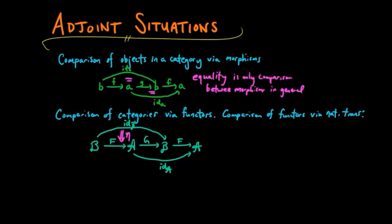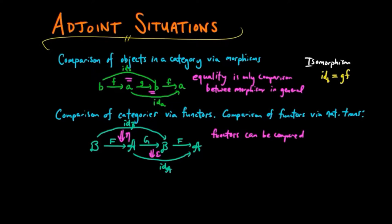For example, the identity functor on B may not be equal to GF, but there may be a way to transform it via eta to GF. In other words, functors can be compared in other ways. The situation above is an isomorphism between objects, which is nearly as good as saying that A is the same as B — it is, in some sense, the correct notion of sameness in a category.